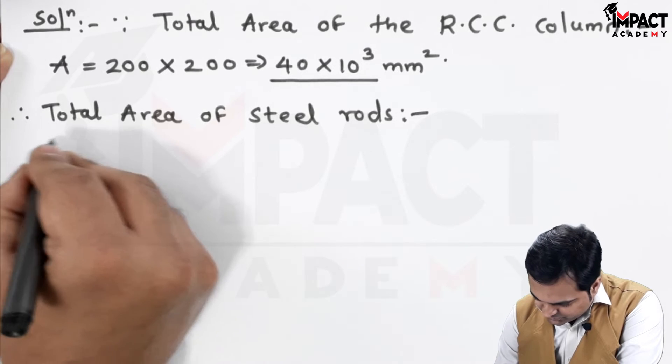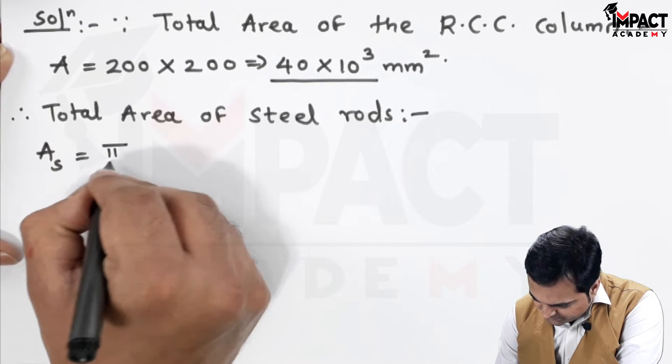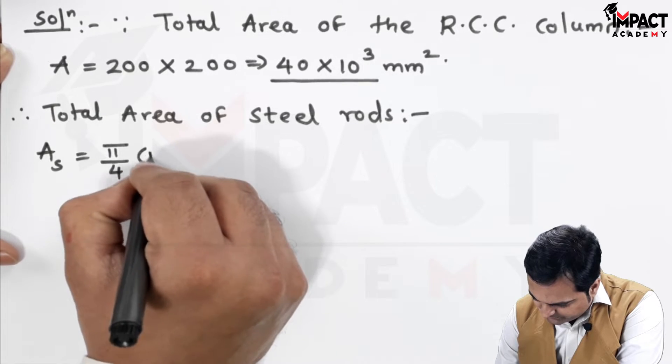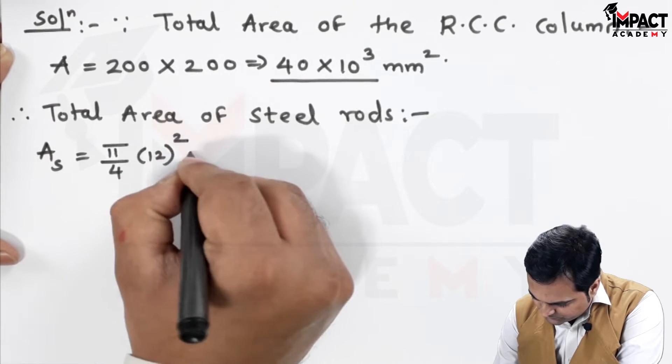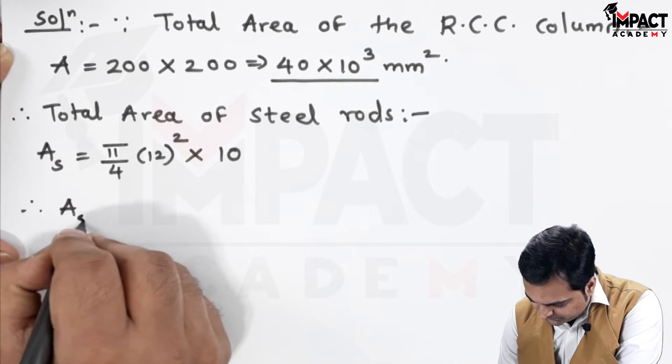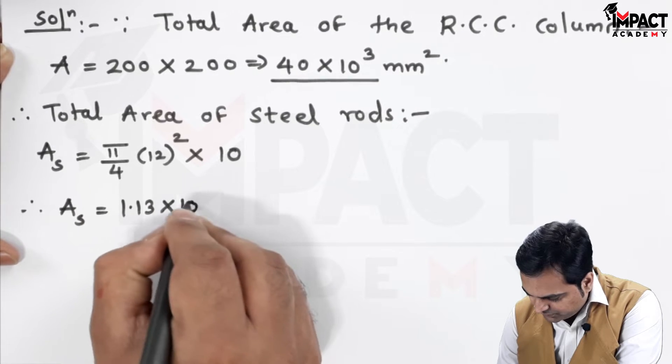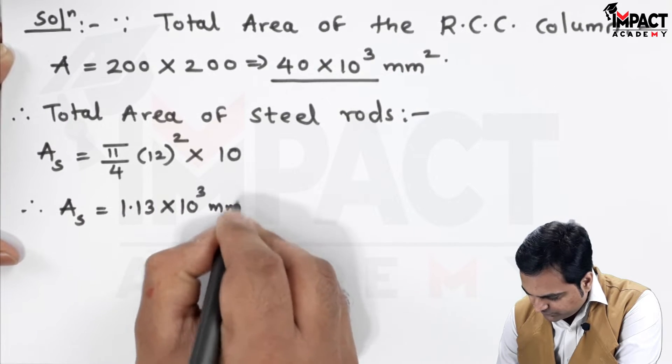Total area of the steel rods, A suffix S, equals pi by 4 D square. And, the diameter is 12 into 10 because 10 number of rods are there. And, the answer is 1.13 into 10 raise to 3 mm square.